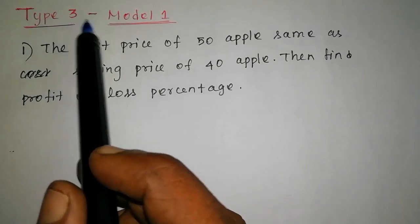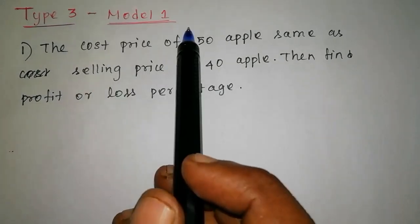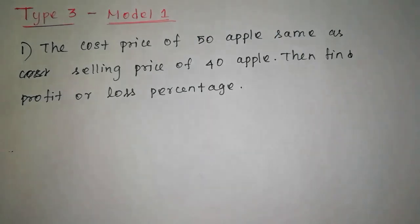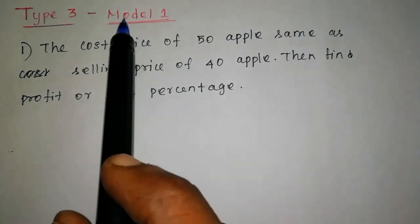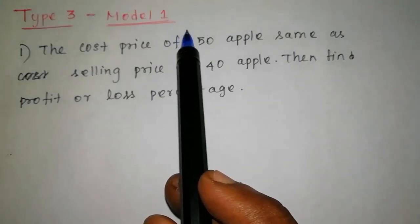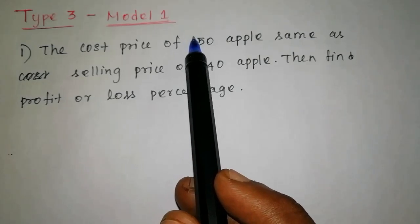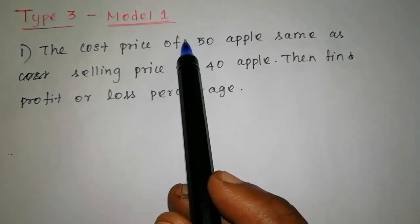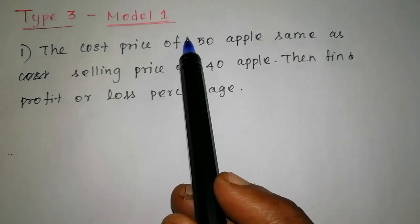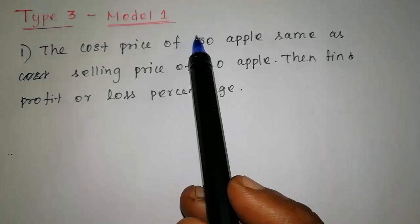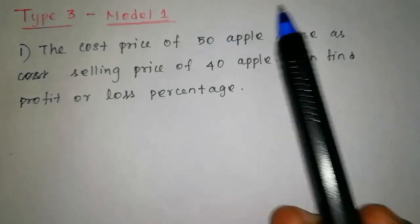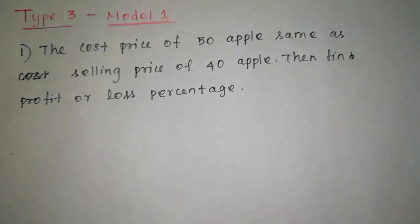Now, there are two models. Type 3 — there are two models. The first model: if you want to talk about this, you can see the price, the quantity, and the questions.